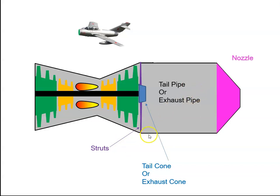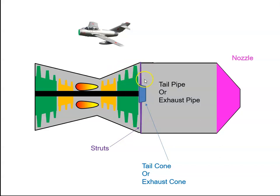The purpose of the struts is to remove some of the swirl that is in the air as it comes through the turbines. The air is coming through the turbines, the turbines are rotating so there is some swirl in the air, and the struts try to remove that swirl and straighten up the air.